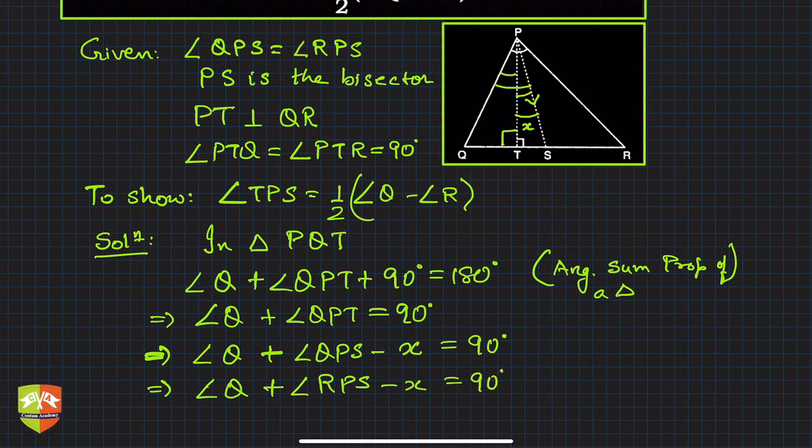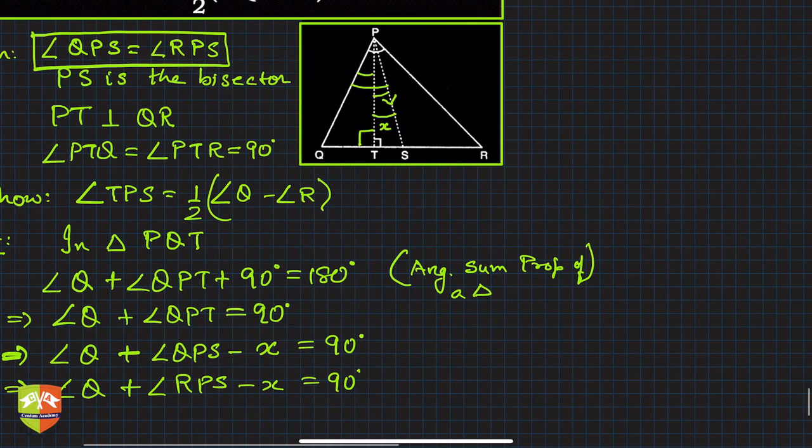Right? What is ∠RPS? See, ∠QPS is equal to ∠RPS from the very given fact, correct? So this is true. Now let me write it here: ∠Q + ∠RPS.